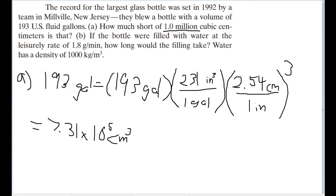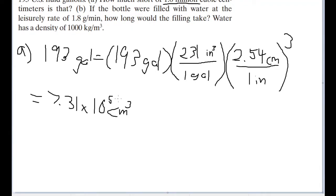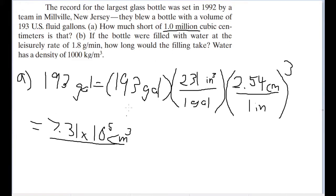The question actually asks, how much short of 1.0 million cubic centimeters is that? So don't fall victim to the common mistake of solving for one thing and then assuming you've answered the whole question. Because what we have to do now is subtract this value we've found here from 1.0 million cubic centimeters to find out how far off we are.